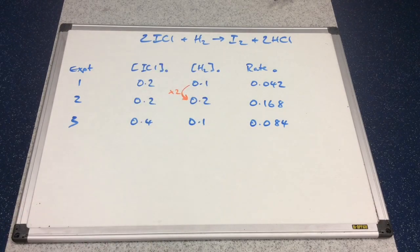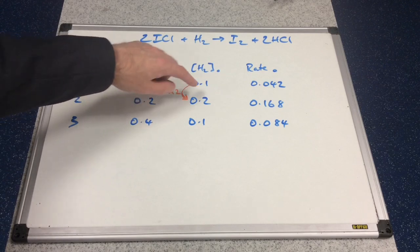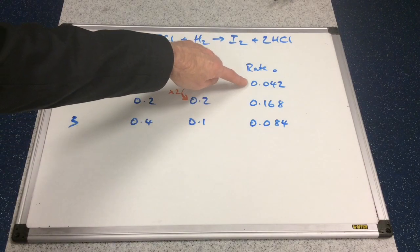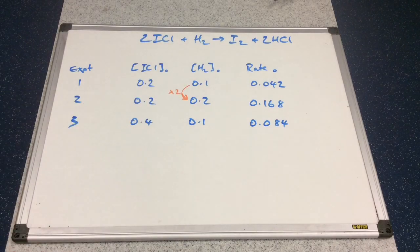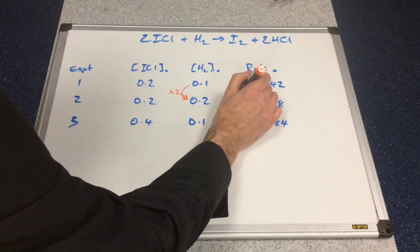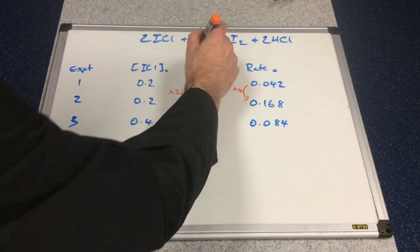Looking at what's happened to the rate, there are three options: it either stays the same, doubles, or goes up by the factor squared. Has the rate stayed the same? No. Has the rate doubled? No — it would have gone up to 0.084. So it must have gone up by the factor squared. Two squared is four, and yes, there is a four-fold increase there.